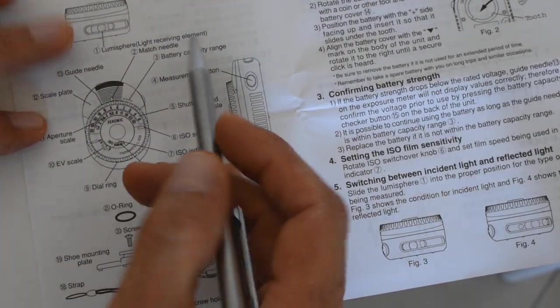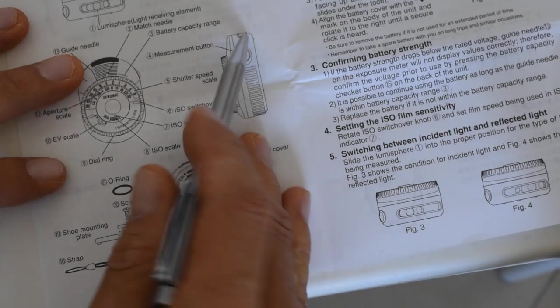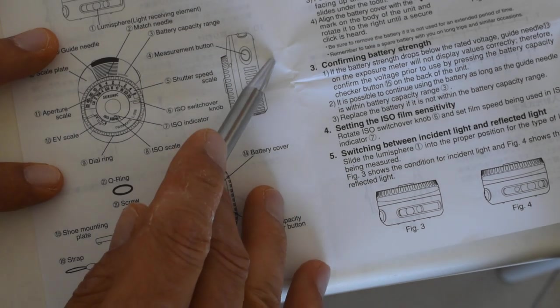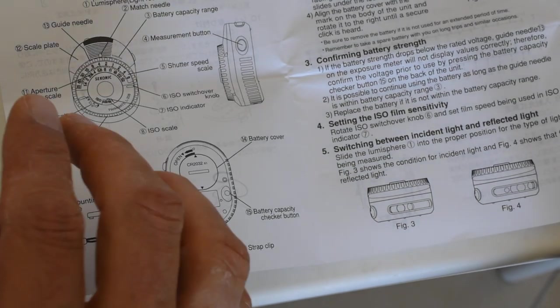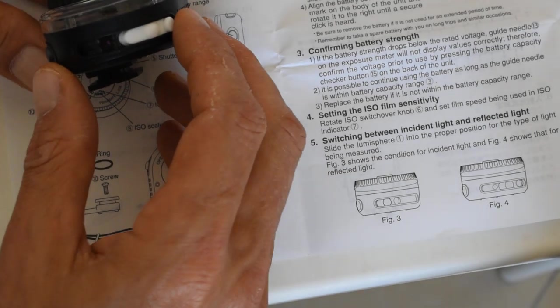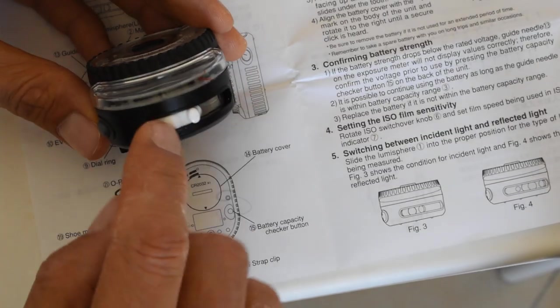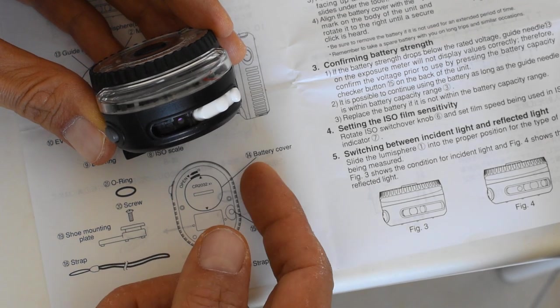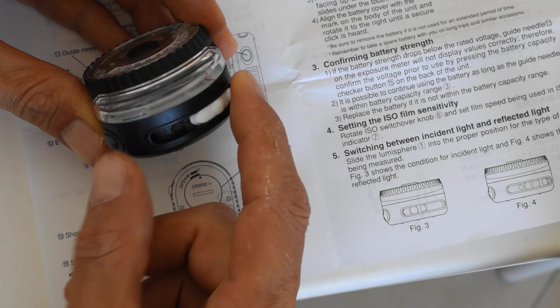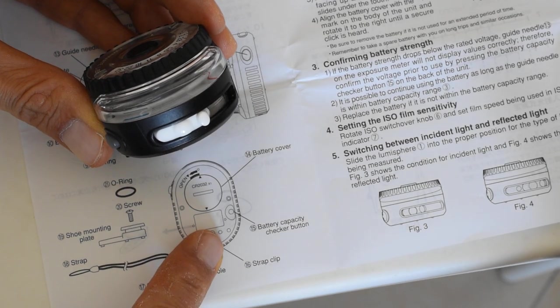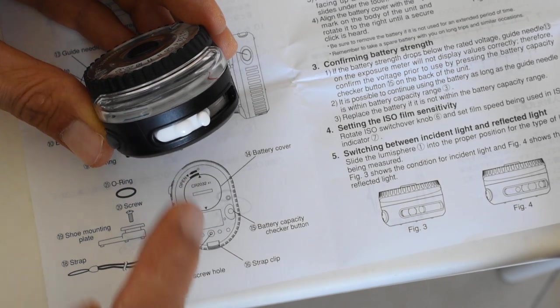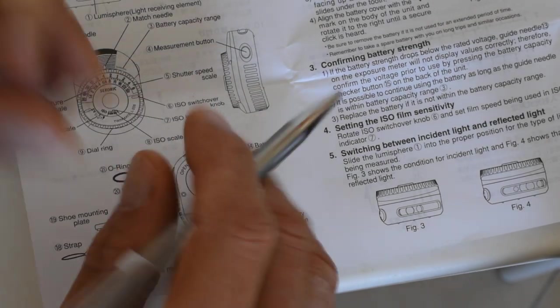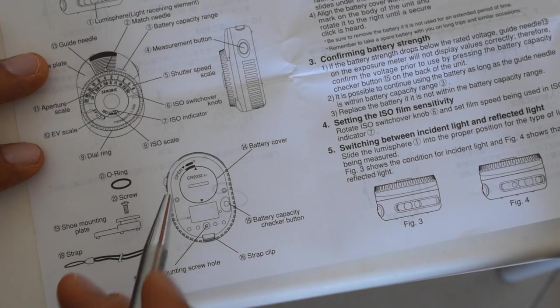One interesting aspect of this particular light meter is that it is designed to be used as both an incident and reflected light meter. I have never used it as an incident meter, but you can apparently. You can do so by doing this. This part right here slides across. This is reflected, this is how I use it, this is how I've always used it as a reflected light meter. But apparently you can just slide that across and use it as an incident light meter as well, though I personally have not done so. The option is available nonetheless.